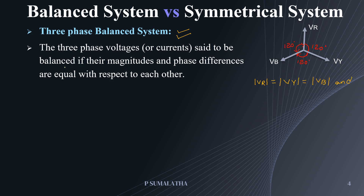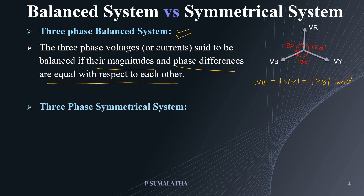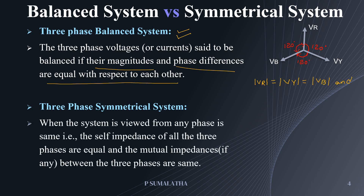In simple terms: if the magnitude of the voltages are the same and the phase difference between each phase is equal, then you can say that system is a perfectly balanced system. Next, what is meant by a three-phase symmetrical system? Whenever the system is viewed from any phase and looks the same, then it is a symmetrical system. The self-impedance of all three phases are equal, and the mutual impedance between the three phases, if any, are also equal.